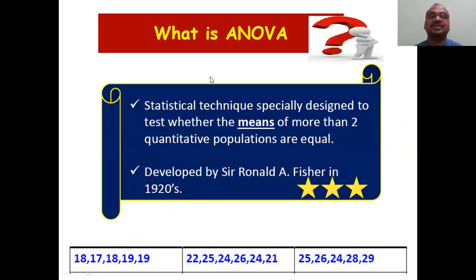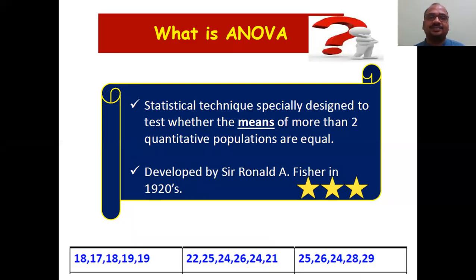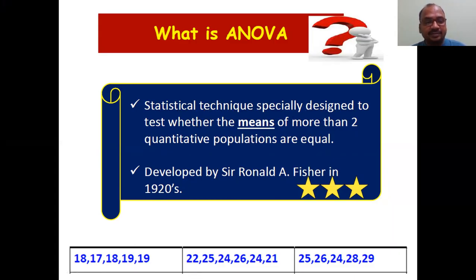Here is the definition of ANOVA you can write in the examination: ANOVA is a statistical technique specially designed to test whether the means of more than two populations or more than two samples are equal or not. It was developed by Ronald A. Fisher. The key point is that you are checking variability in more than two groups — group one, group two, group three — or sample one, sample two, sample three, or population one, population two, population three.